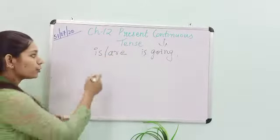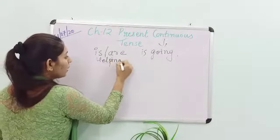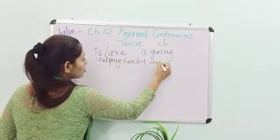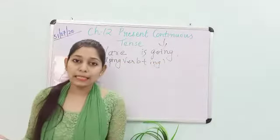So here we have to use helping verb. You have to use helping verb with ing. Only this is the formula of present continuous tense.